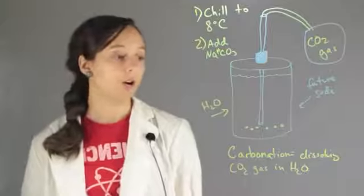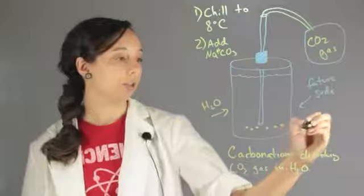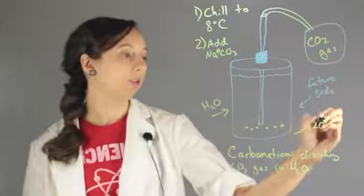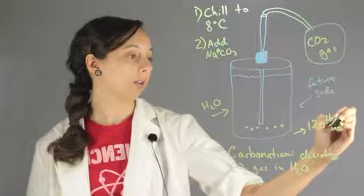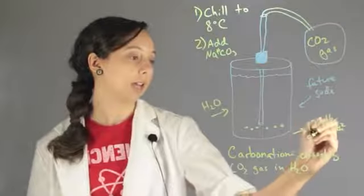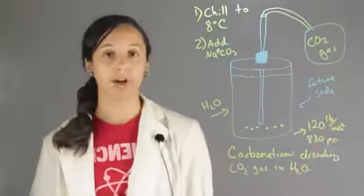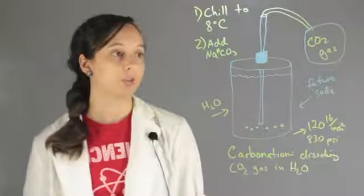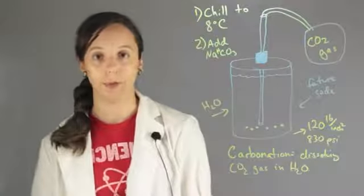And so once you have this, you pressurize it all the way up to 120 pounds per inch squared, and that equals 830 kPa of your final pressure. And this is how your system will remain until you decide to open up that keg and bottle it and then eventually open up your soda.